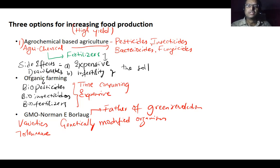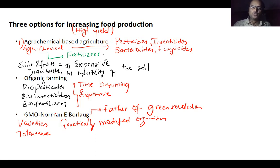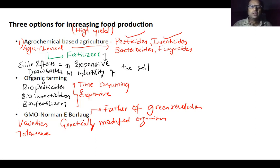The first method is agrochemical-based agriculture. We use certain chemicals because crops face disturbances from pests, insects, bacteria, fungus, and pathogens that destroy crops and reduce yield. In agrochemical-based agriculture, we use pesticides, insecticides, bactericides to kill bacteria, fungicides to kill fungus, and chemical-based fertilizers.